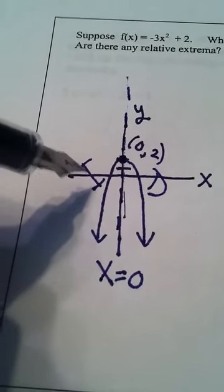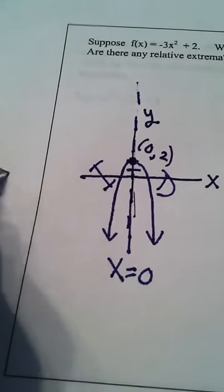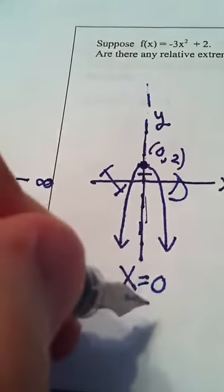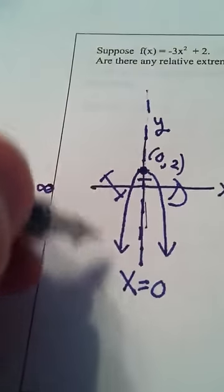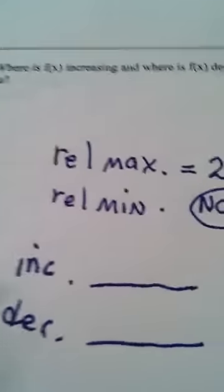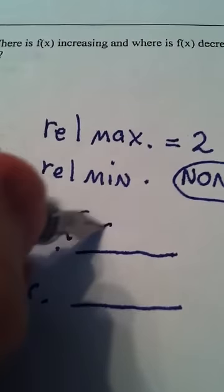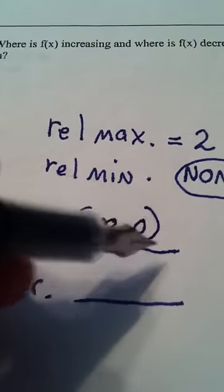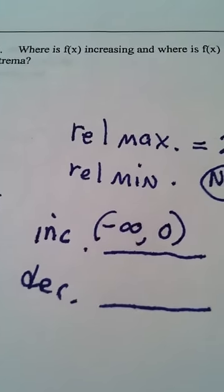So, if I want to know where it's increasing, I'm coming from negative infinity. I'm walking along the x axis from negative infinity, and when I hit 0, that's where it changes. So, the way I would answer increasing is from negative infinity to 0, and remember to put a paren, you never put a bracket for increasing, decreasing, or constant.